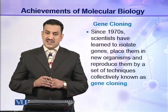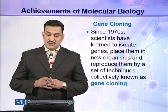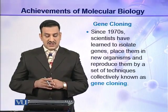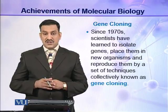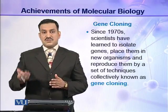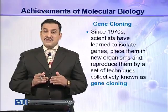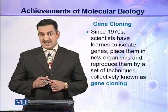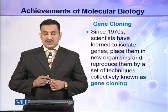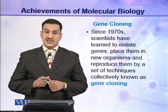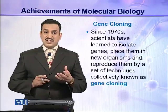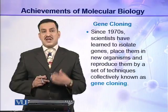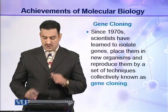In the 1970s, an important achievement was gene cloning. Scientists learned to isolate genes from some organisms, place them in new organisms, and reproduce them using a set of techniques called gene cloning. In this way, genes and characteristics from one organism can be transferred to another organism.